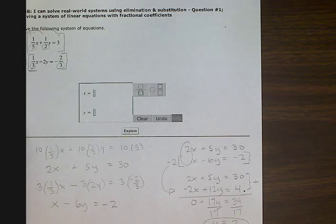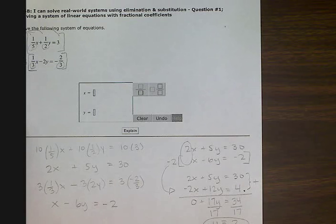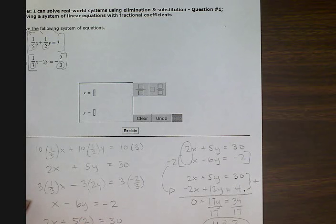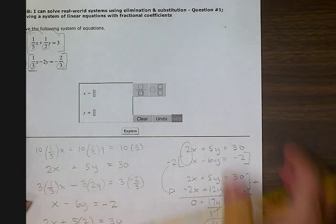So now I'm going to take this two and put it back into one of these two equations. I think I will pick the top equation. Two x plus five times two equals thirty. Or two x plus ten equals thirty.